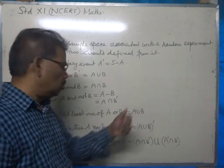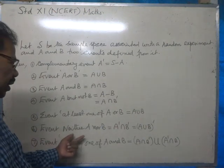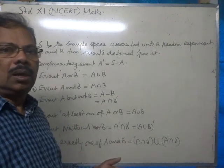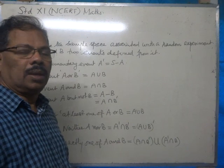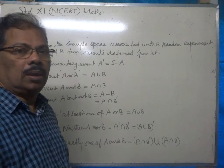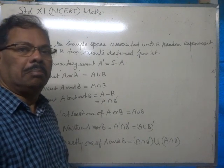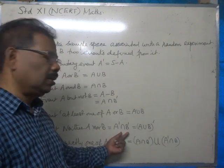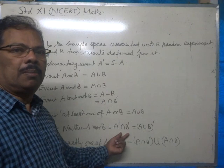Now, neither A. We cannot take elements of A. We cannot take elements of B. That is A dash intersection B dash.